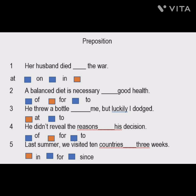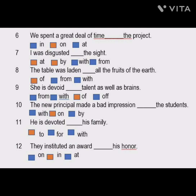The seventh sentence: 'I was disgusted ___ the sight.' Options are at, by, with, and from. Let us complete it: 'I was disgusted at the sight,' 'disgusted by the sight,' 'disgusted with the sight,' or 'disgusted from the sight.' Luckily we have two correct options here — 'I was disgusted at the sight' is correct and 'I was disgusted by the sight' is also correct.